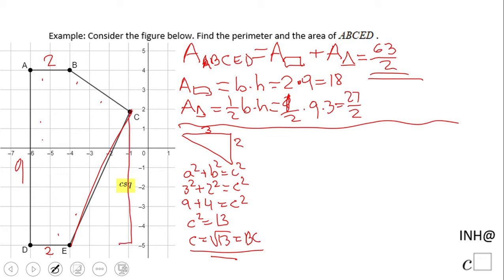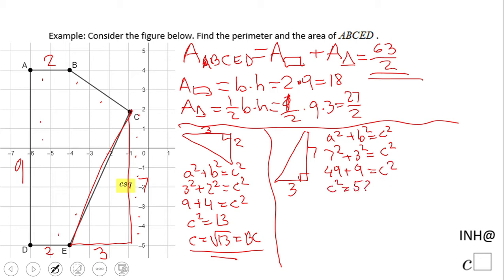Now we need to find CE. Again, another triangle—this is 7 and 3. So another Pythagorean theorem: a² + b² = c². Seven squared plus three squared equals c². That's 49 + 9 = c². So c² equals 58, and c equals √58.